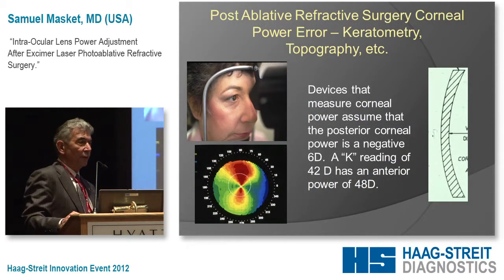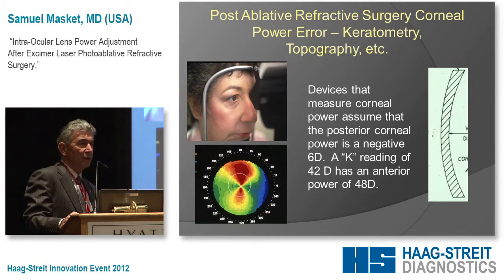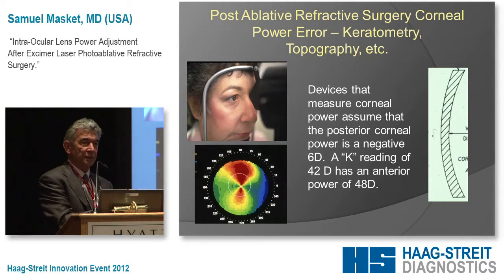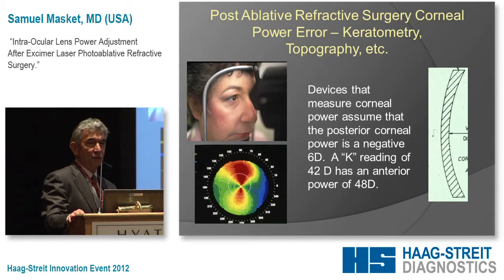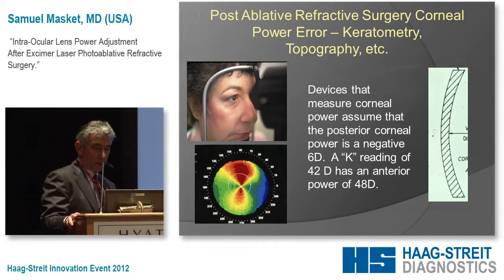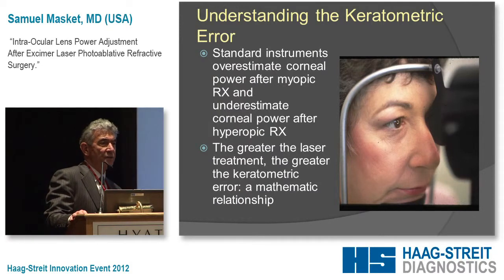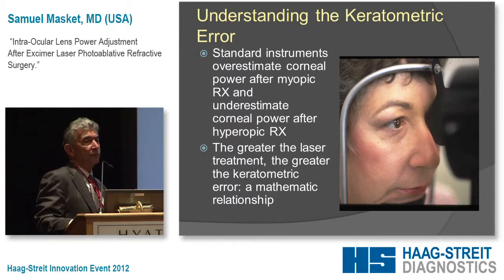We got into trouble when we used standard measurement methods on eyes that have had photoablative surgery. In the original Gullstrand models, we assumed a back corneal power of approximately 5.88 or 6 diopters. So when a patient is measured at a keratometer or automated topographer and you read a 42-diopter cornea, what you're actually reading is an anterior surface of 48 diopters and a back surface of minus 6. When those relationships are no longer near-parallel, the effect is to overestimate corneal power in myopic ablative patients, and underestimate it in hyperopic ablative patients.